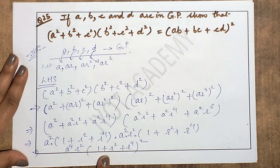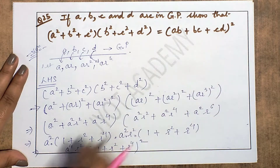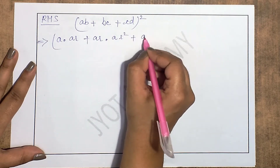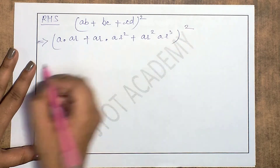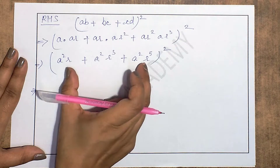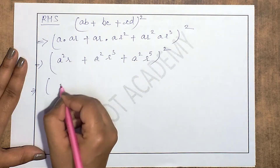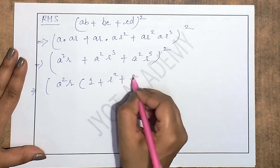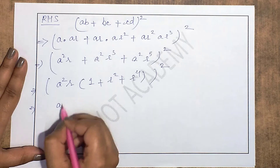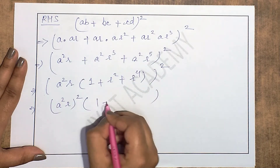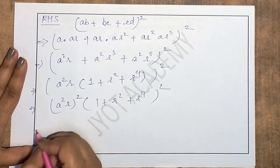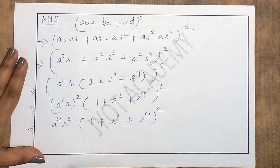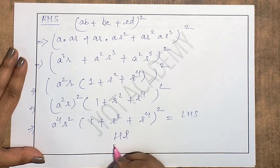Now the right-hand side: ab+bc+cd = a·ar + ar·ar² + ar²·ar³ = a²r + a²r³ + a²r⁵ = a²r(1+r²+r⁴). Squaring: (ab+bc+cd)² = [a²r(1+r²+r⁴)]² = a⁴r²(1+r²+r⁴)². This equals the left-hand side. Hence proved.